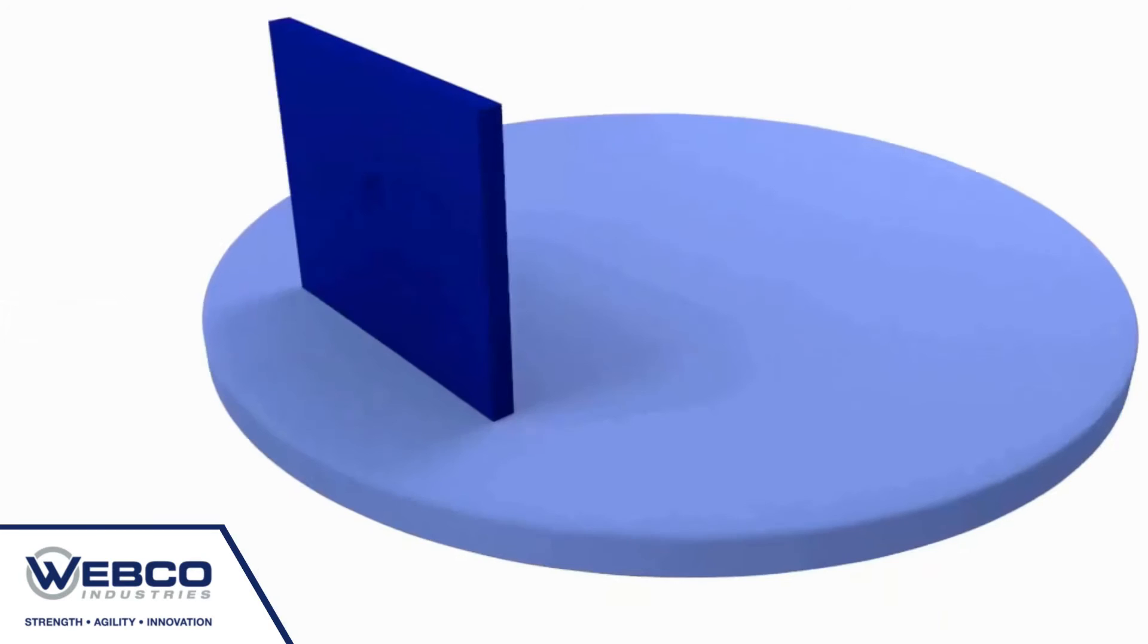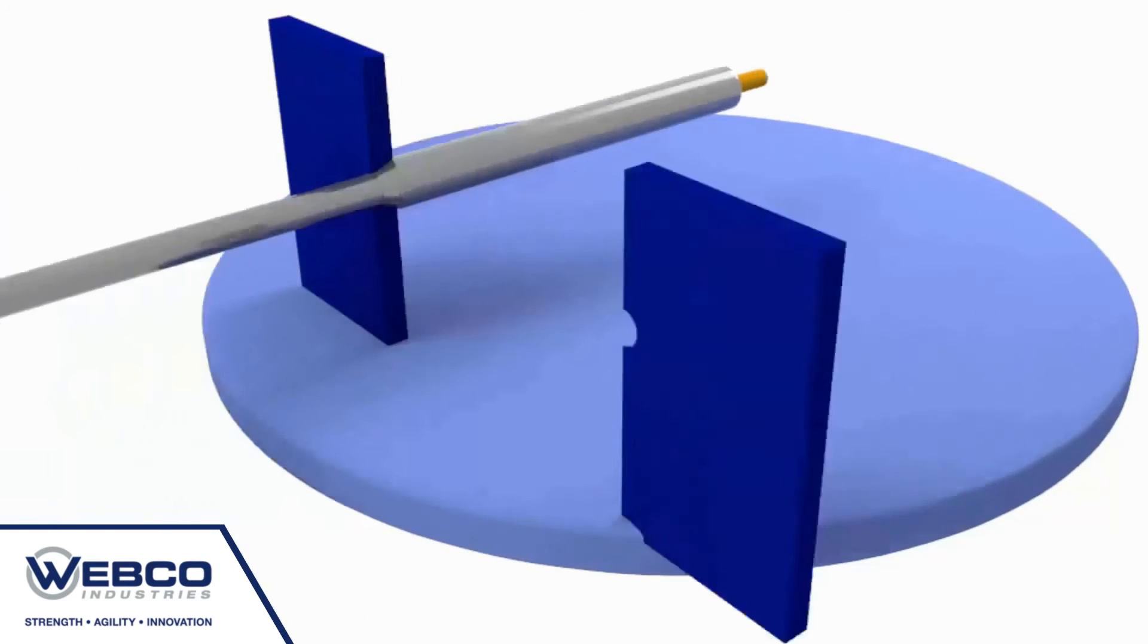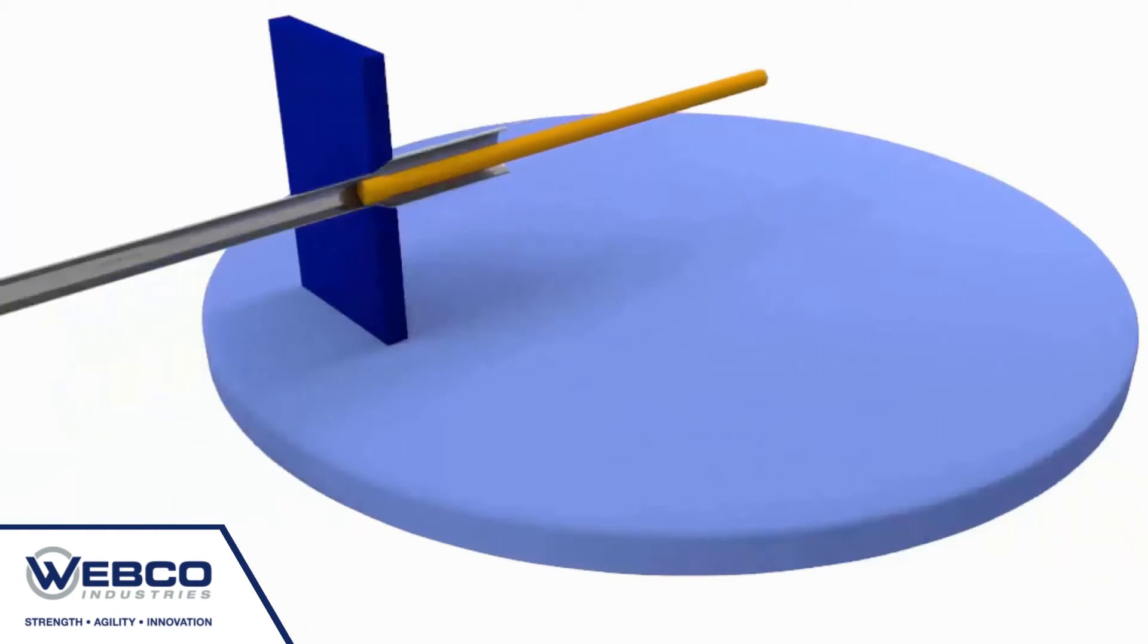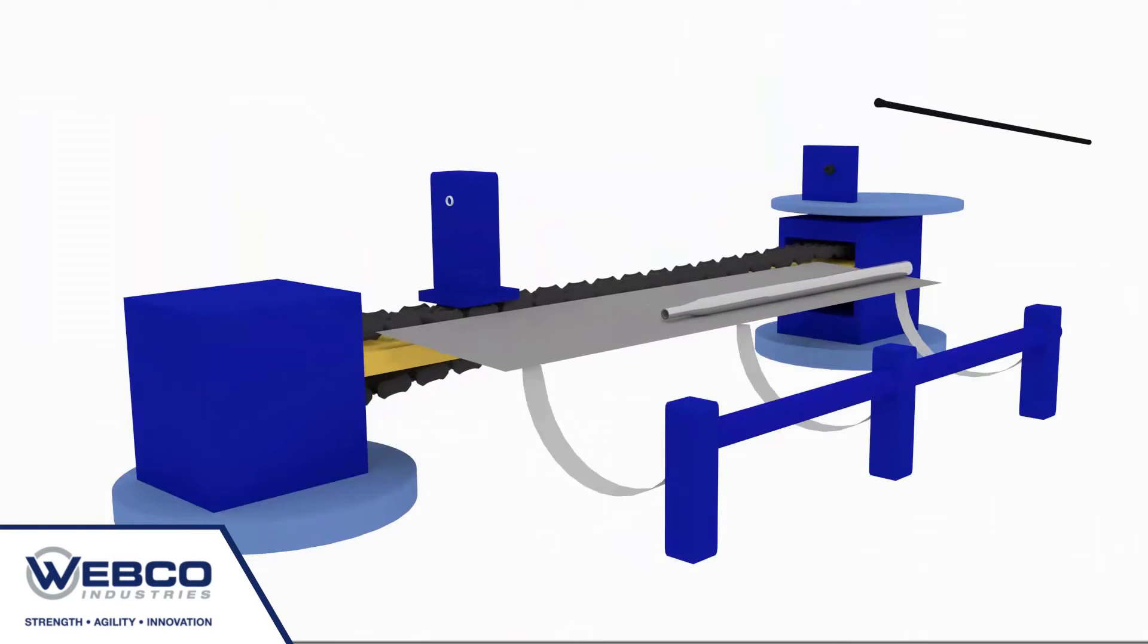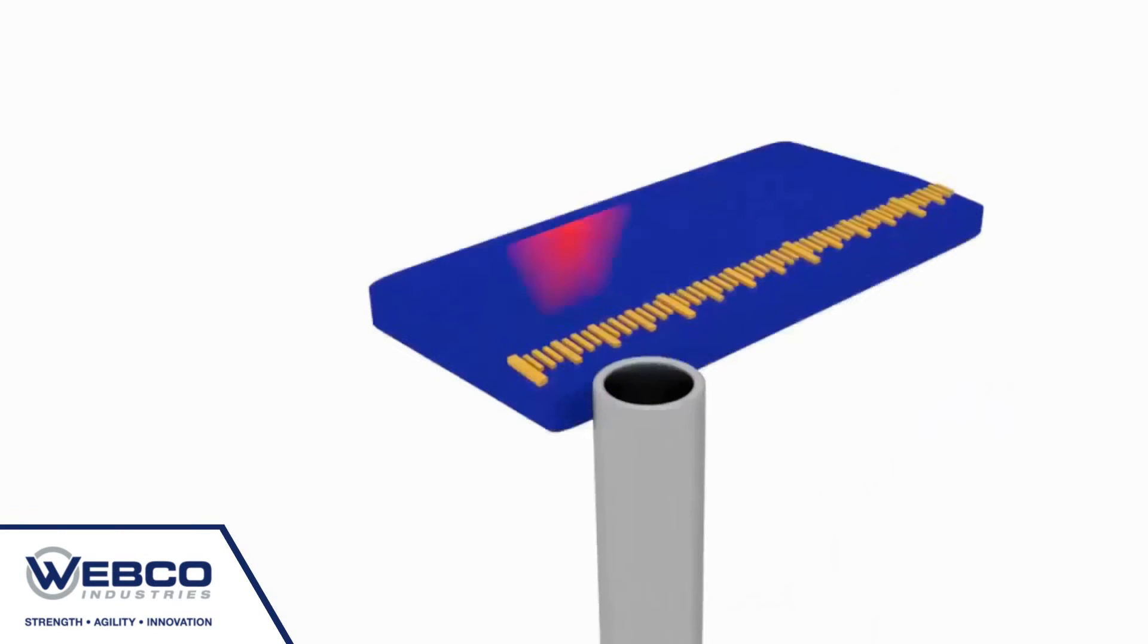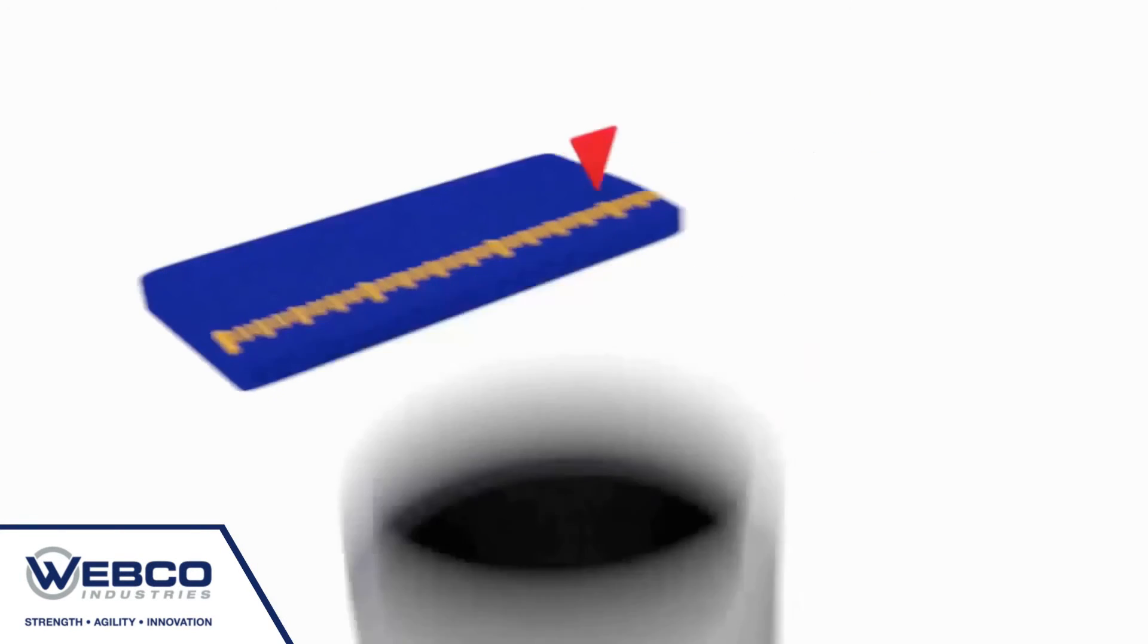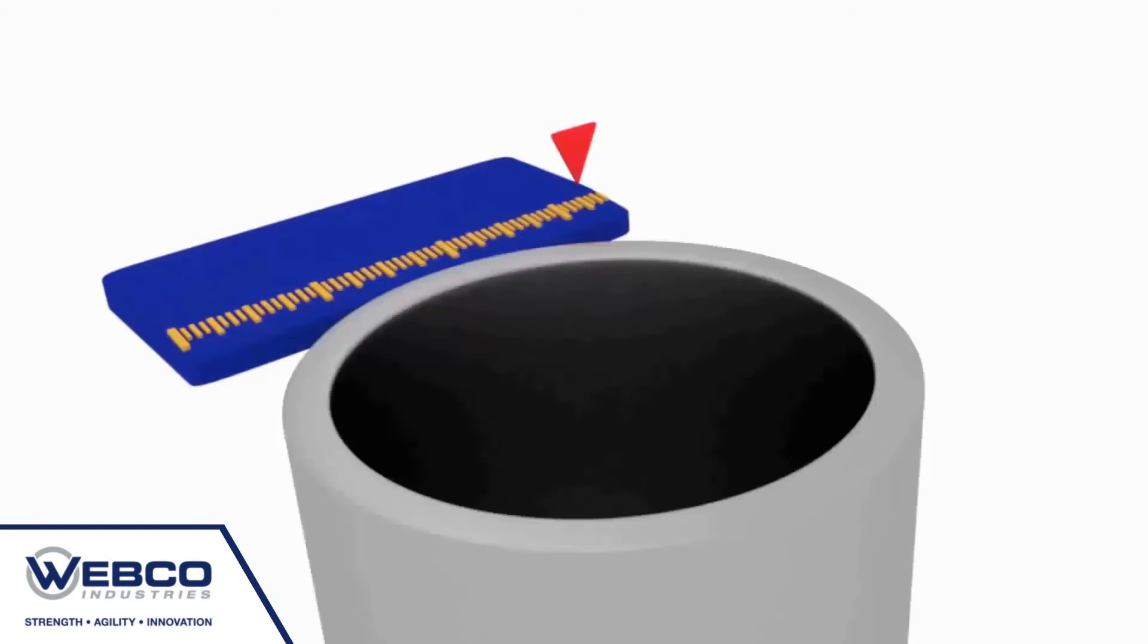The drawn over mandrel process reduces the diameter of the tube. A mandrel is pushed to the inside of the tube to control the ID and the wall, then the tube is drawn over the mandrel. This process allows the customer to specify tight tolerances on the OD, ID, or wall. Webco is able to produce drawn over mandrel tube products to a wide range of customer specified sizes and mechanical properties.